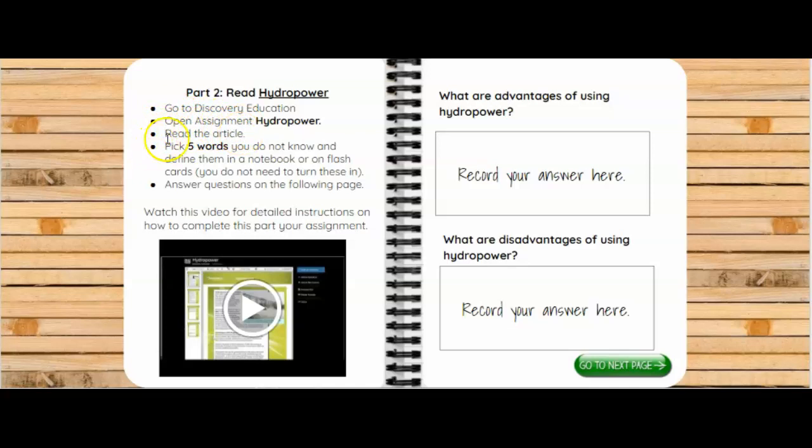And then while you're reading, I want you to pick out five words you don't know and define them in a notebook or on flashcards. You won't need to turn this in. This is just building your background knowledge so that you can be successful on your summative. And then I want you to answer these questions on the next page: What are advantages of using hydropower? And what are disadvantages of using hydropower?